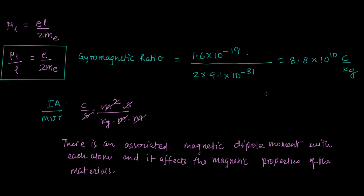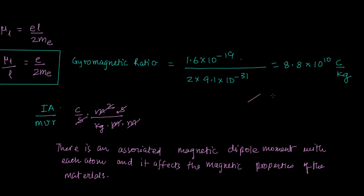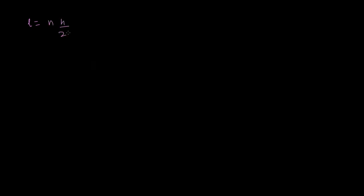As per Bohr's postulates, the angular momentum L of an electron is quantized. It comes in quanta of H/(2π), so L = nH/(2π). This means it is discrete — it does not vary continuously; it takes values H/2π, 2H/2π, and so on.